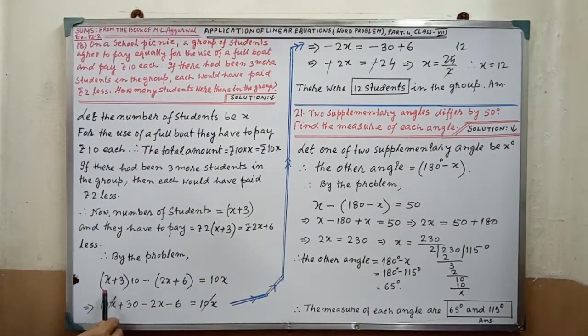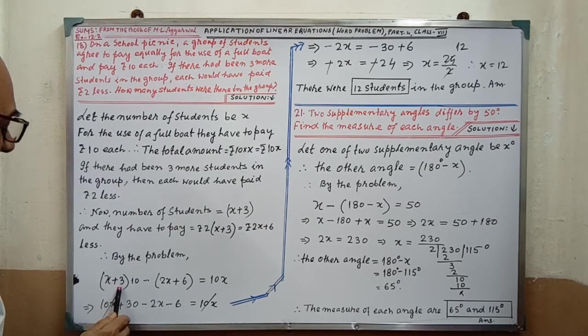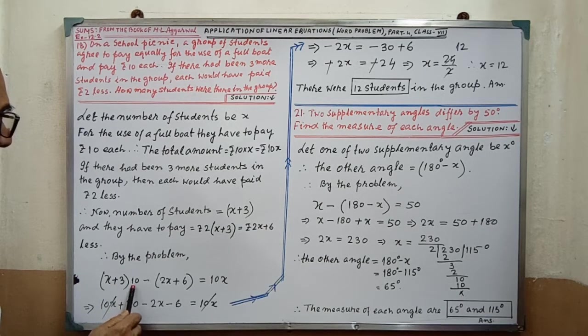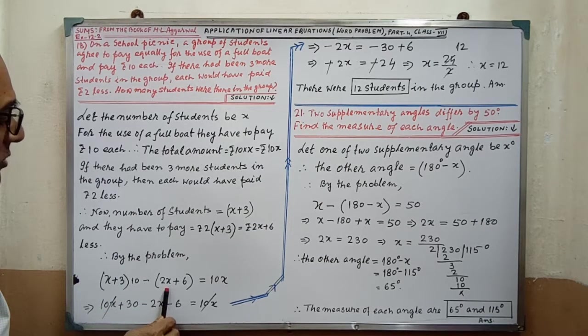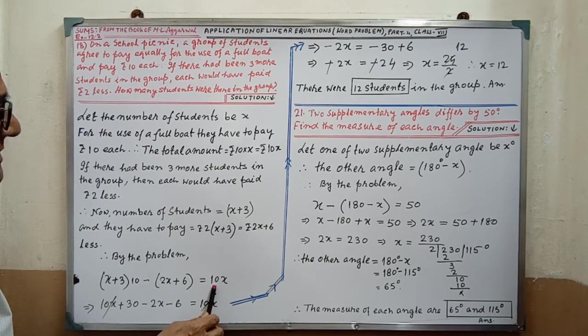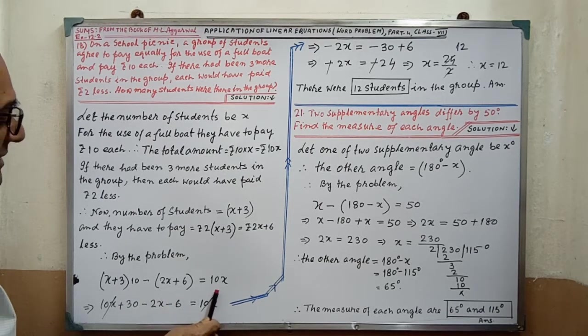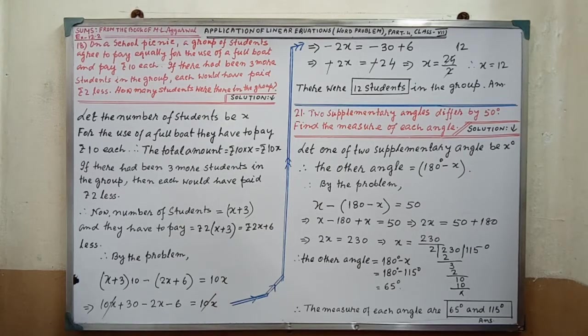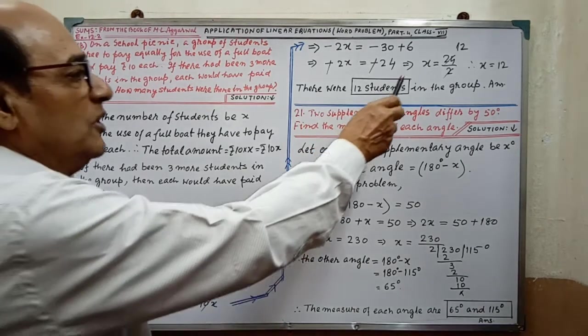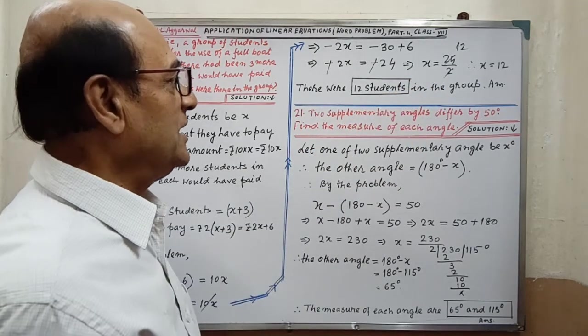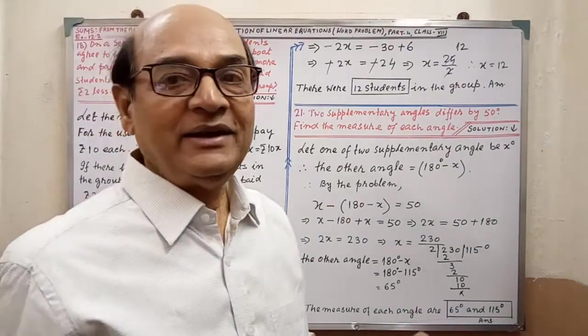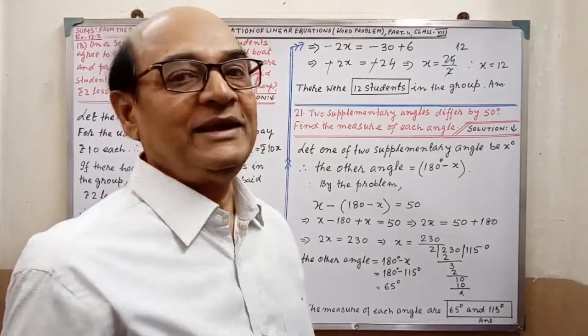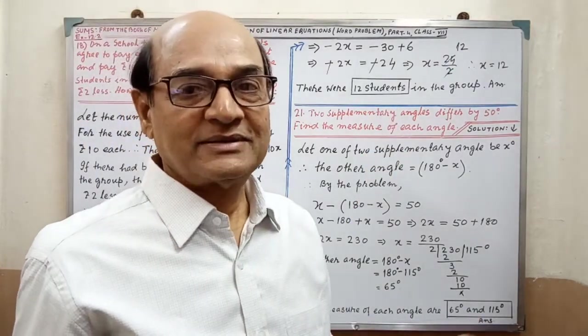By the problem, number of students, that is x plus 3, they are paying rupees 10 minus this amount, and total that is 10x. By the problem, we are getting this equation. Then by simplifying, we are getting the value of x, that is 12. Therefore, there were 12 students in the group. Sum is completed.